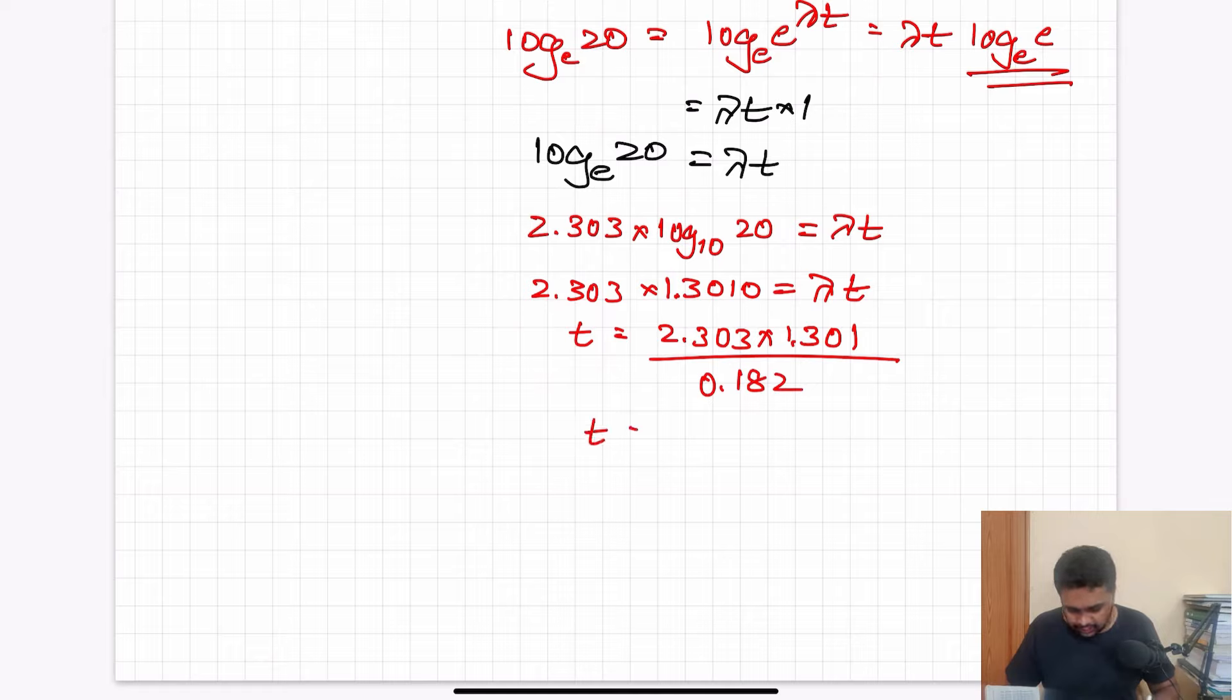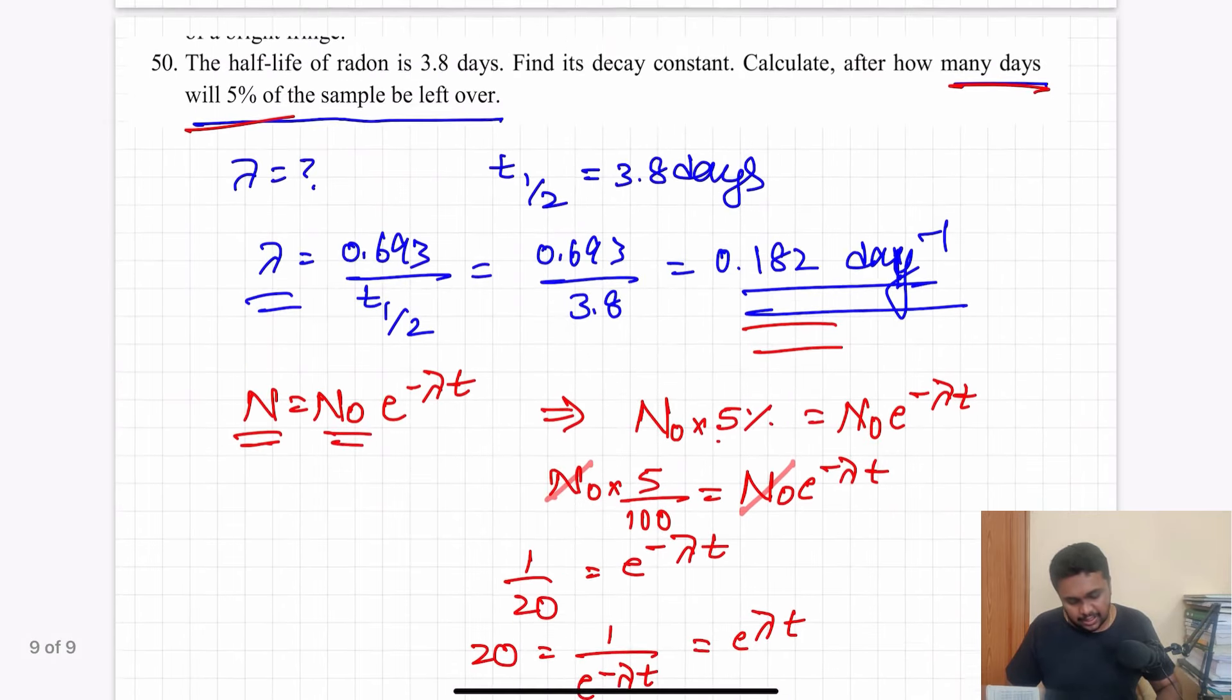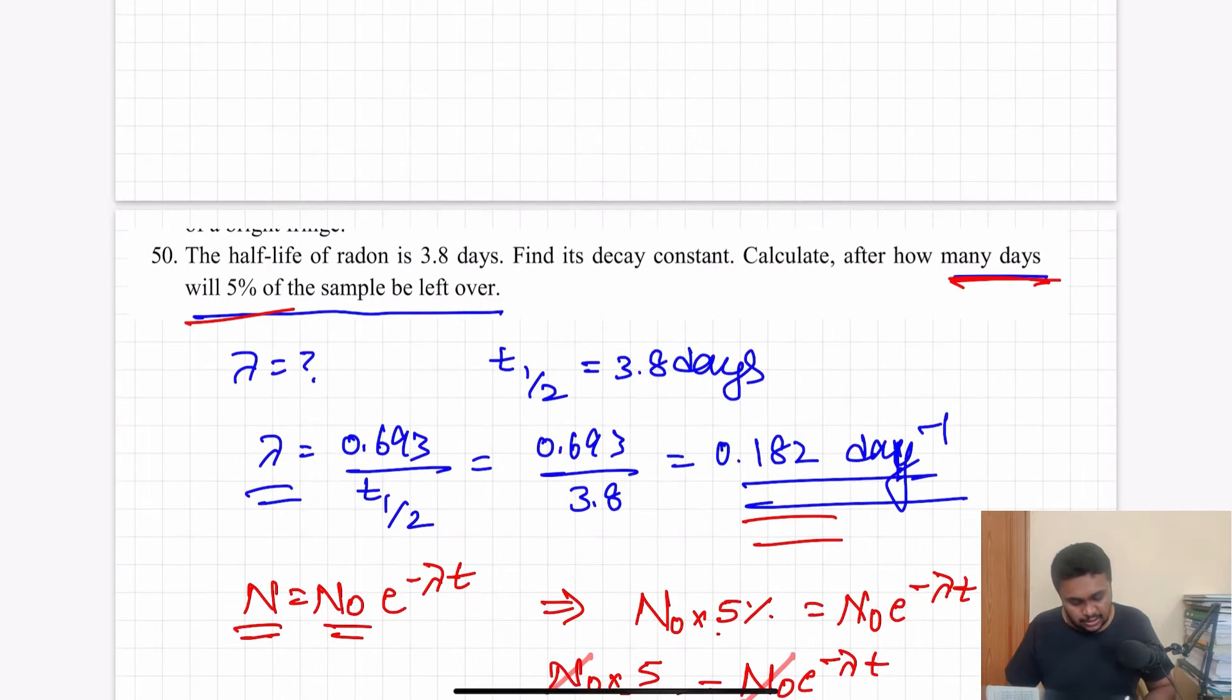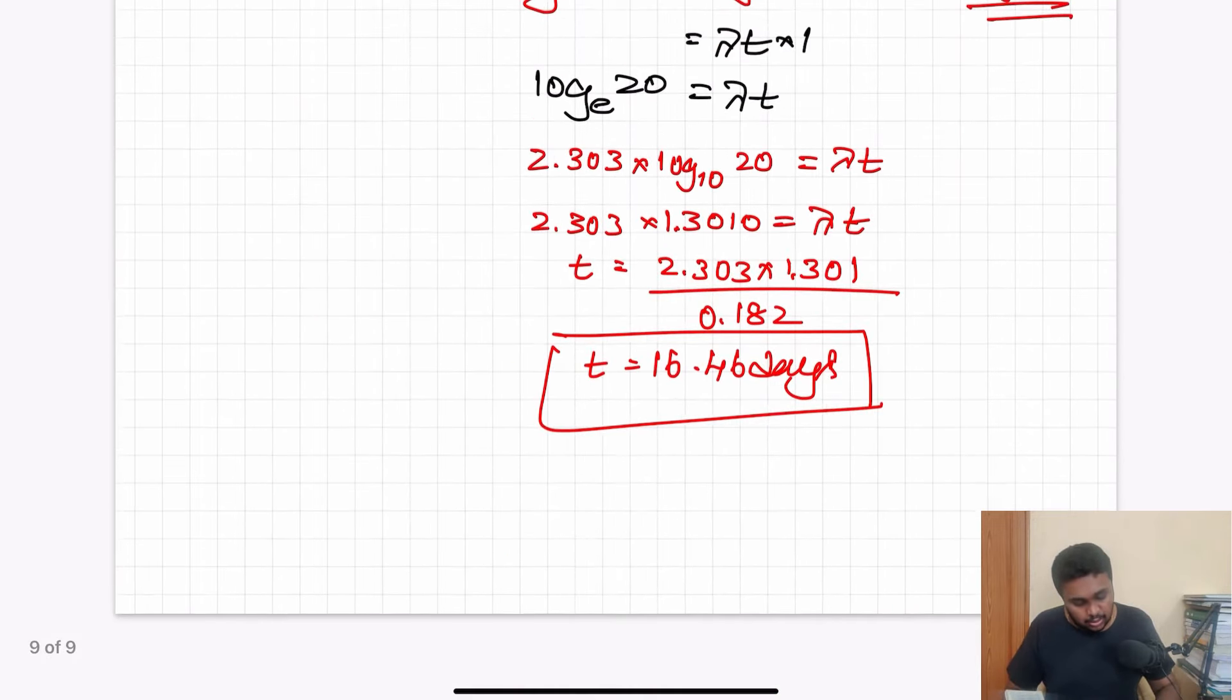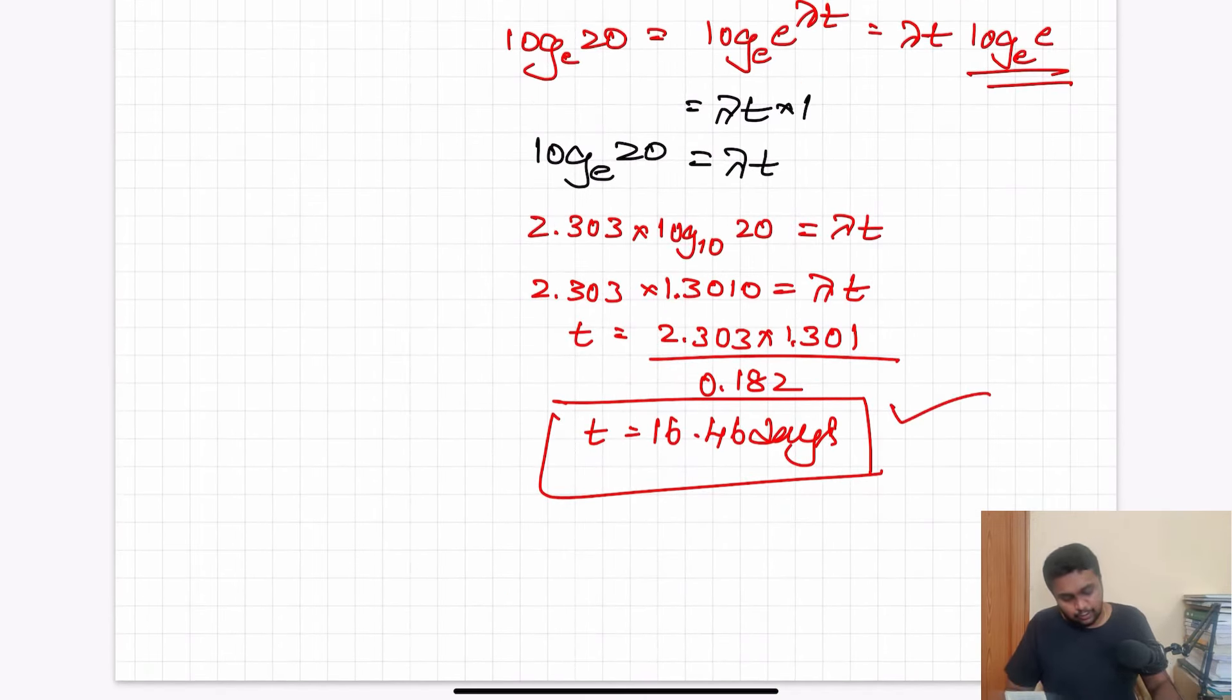So t is equal to 2.303 into 1.301 divided by lambda, which is 0.182. t will be equal to 16.46 days.